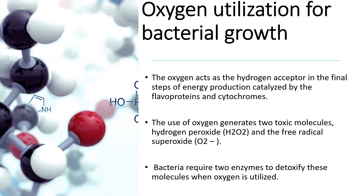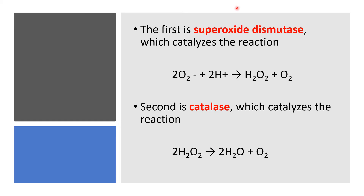For bacterial growth, oxygen is required. Oxygen acts as the hydrogen acceptor in the final steps of energy production, catalyzed by flavoproteins and cytochromes. However, the use of oxygen generates two toxic molecules: hydrogen peroxide and the free radical superoxide. Bacteria require two enzymes to detoxify these molecules. The first enzyme is superoxide dismutase, which reduces the free radical oxygen species into hydrogen peroxide and oxygen. The second enzyme is catalase, which converts hydrogen peroxide into water and oxygen.